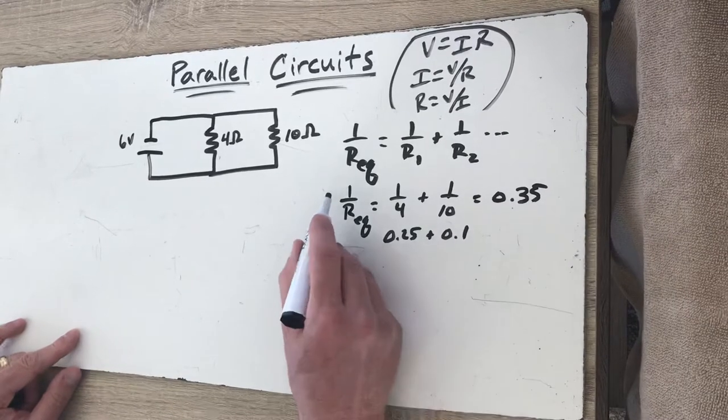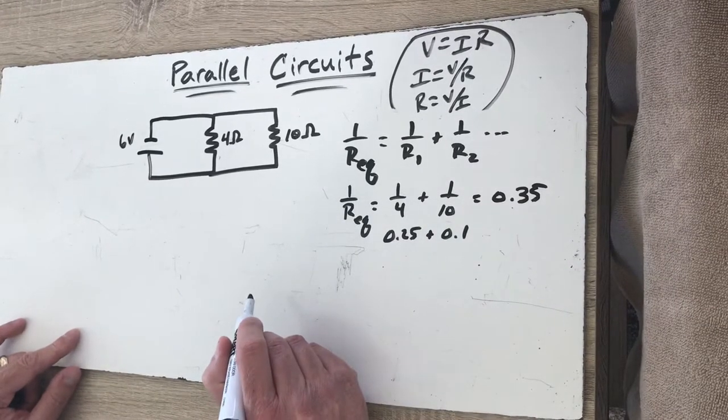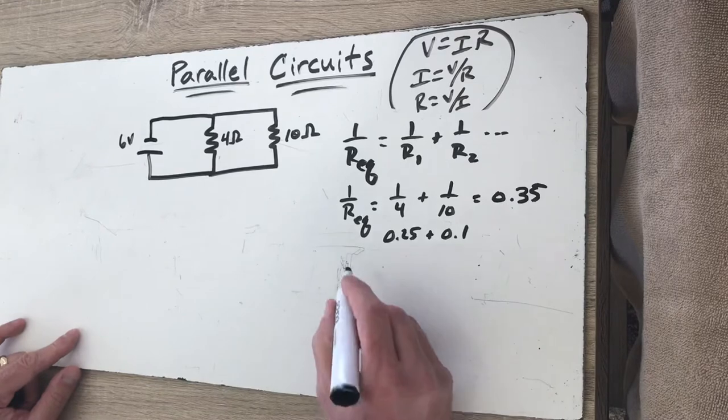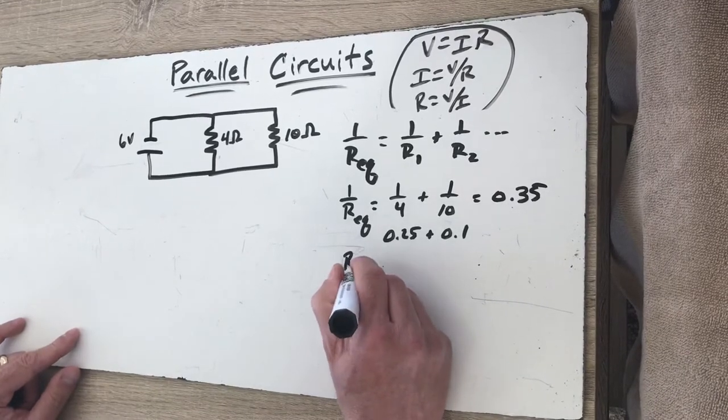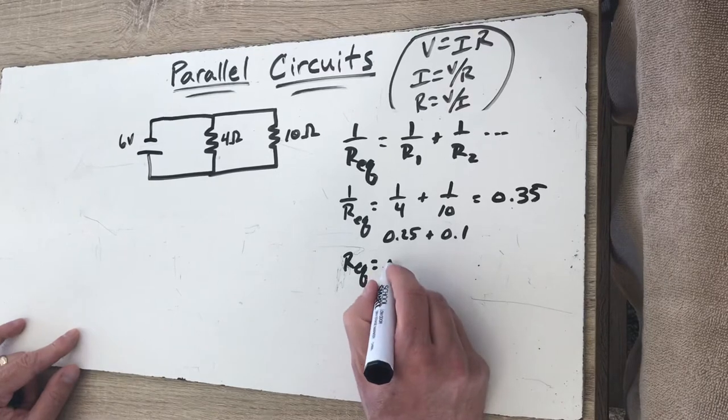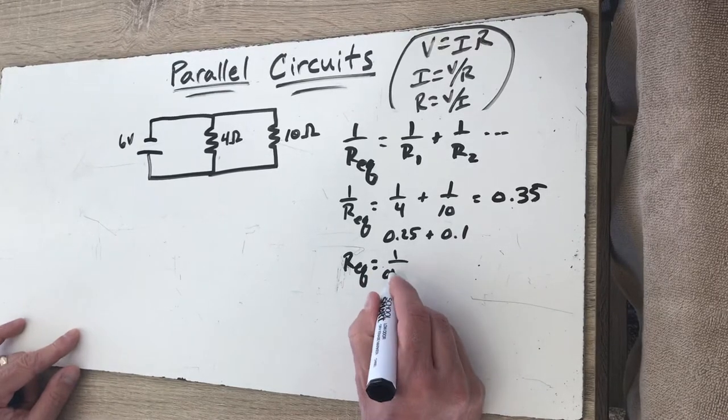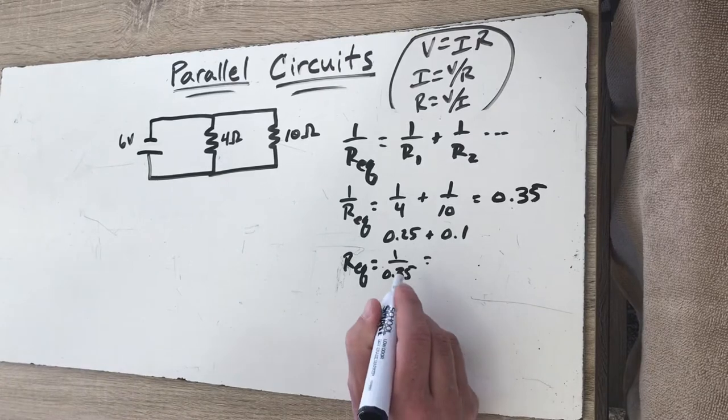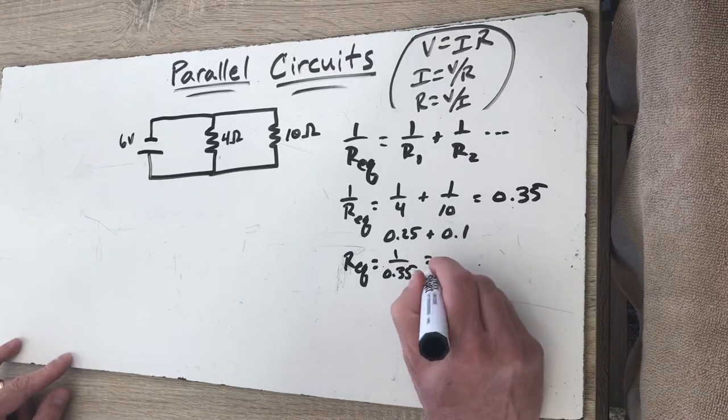That is not the equivalent resistance. That's 1 over the equivalent resistance. I still have to flip both of these fractions. So the equivalent resistance is going to be the reciprocal, 1 divided by 0.35, which gives me a value of 2.86 ohms.